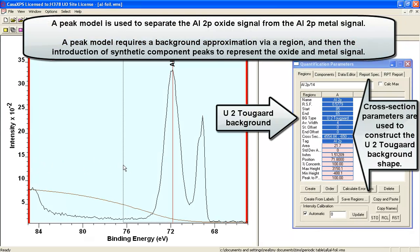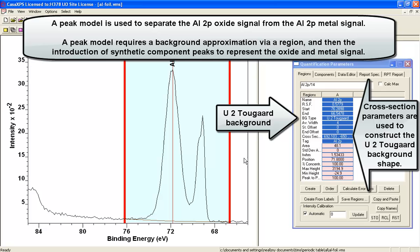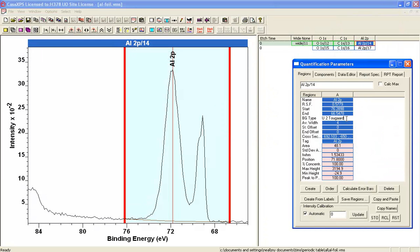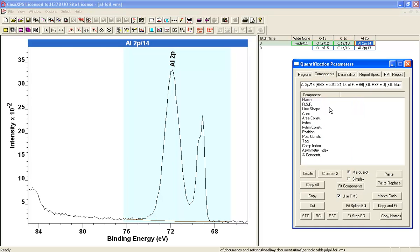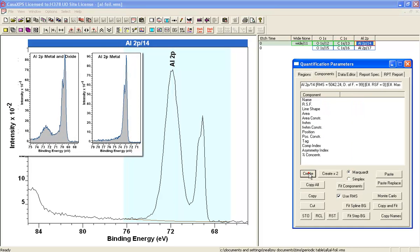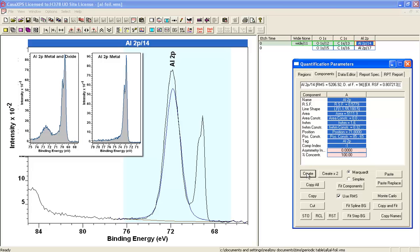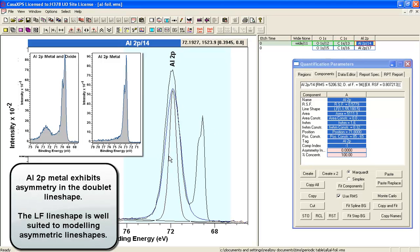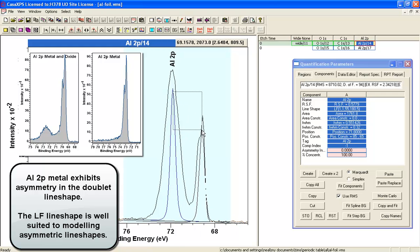So the background is a U2 Tougaard background, and we'll go for the component and introduce some synthetic components. Here we've got one peak here which has come in as an oxide, so I'm going to thin this down and then I'll move this over to the metal.